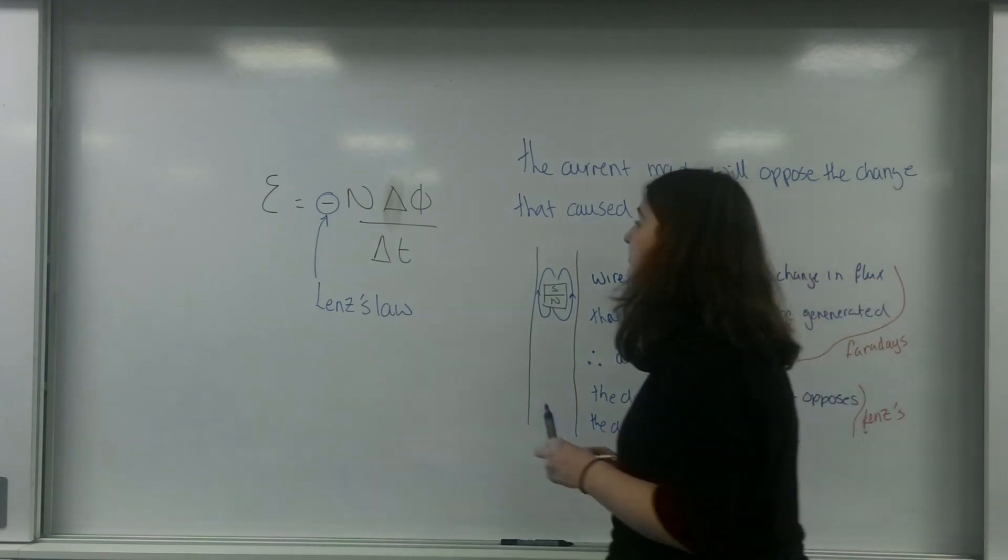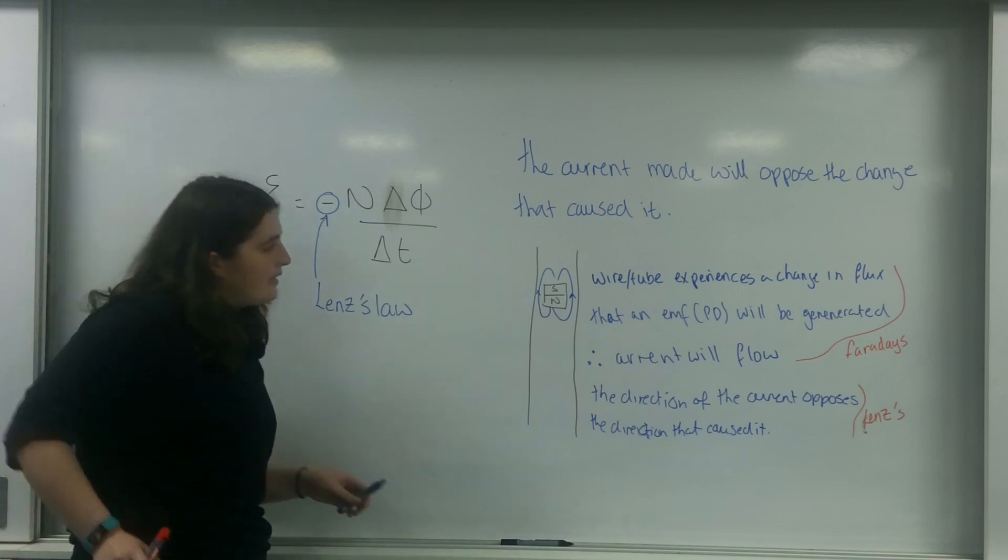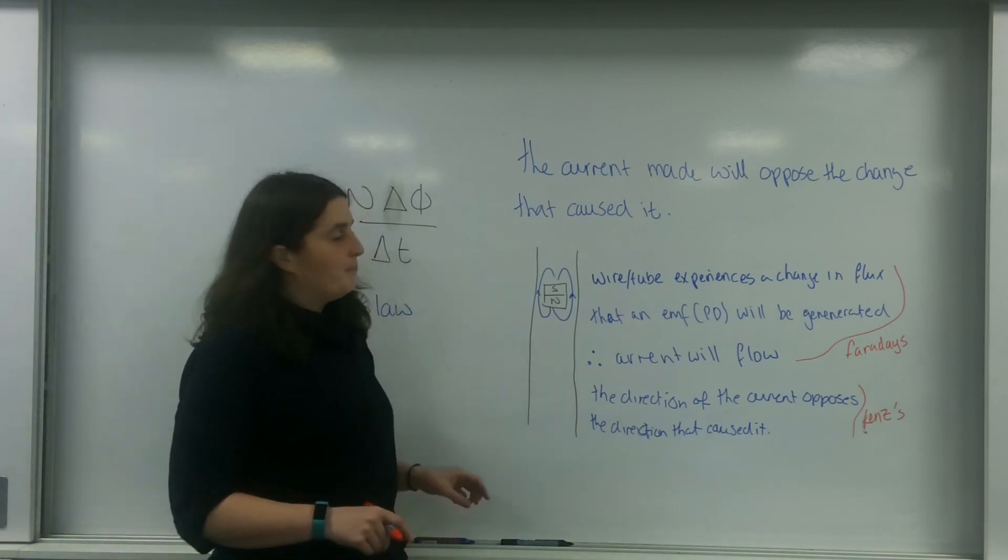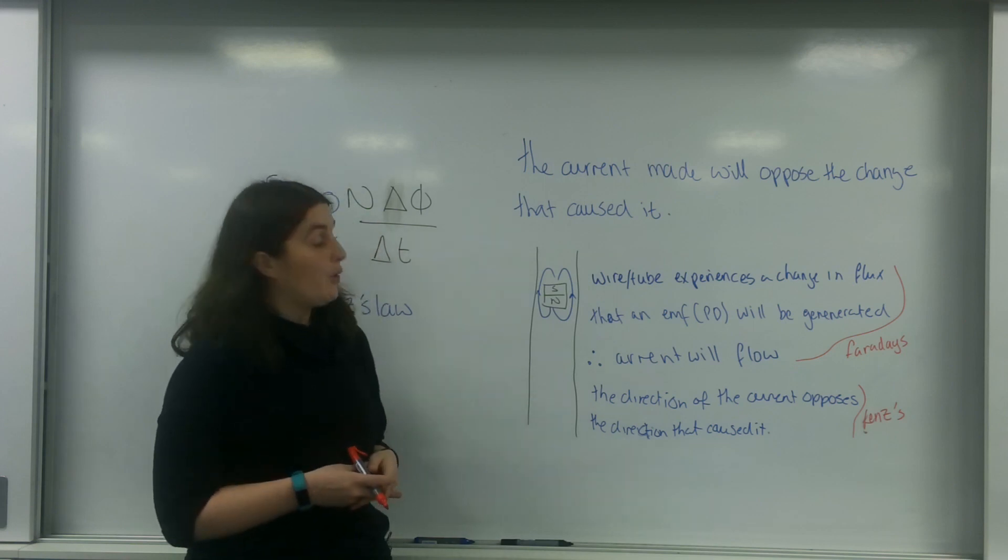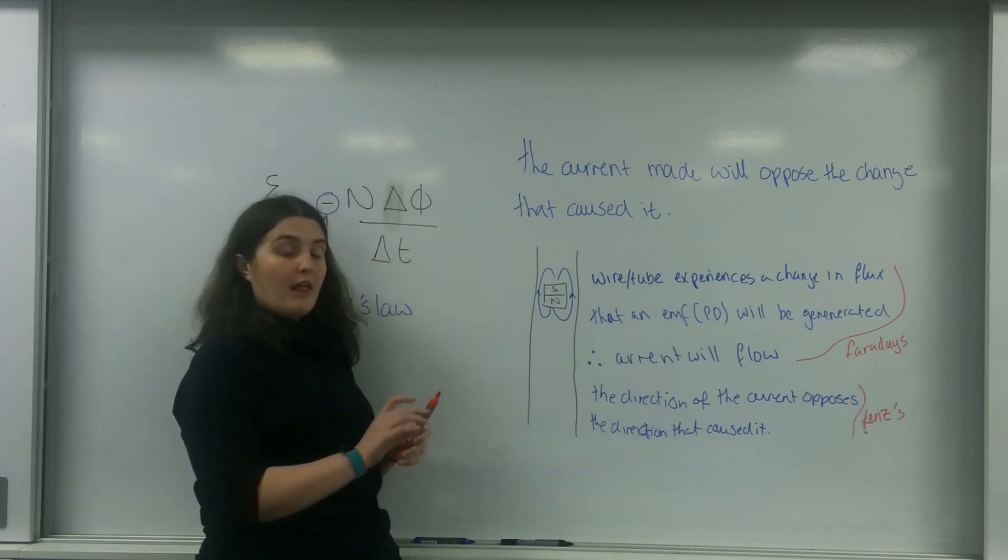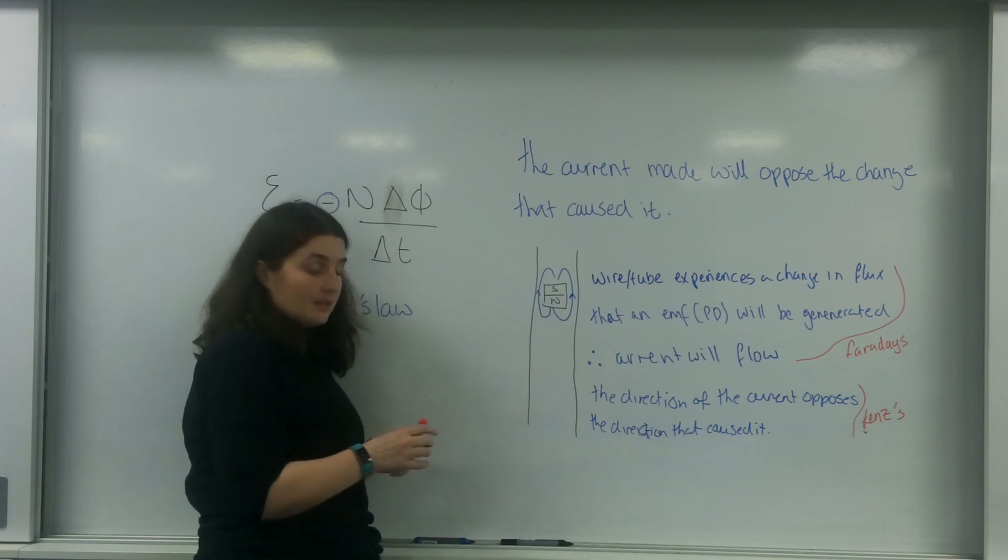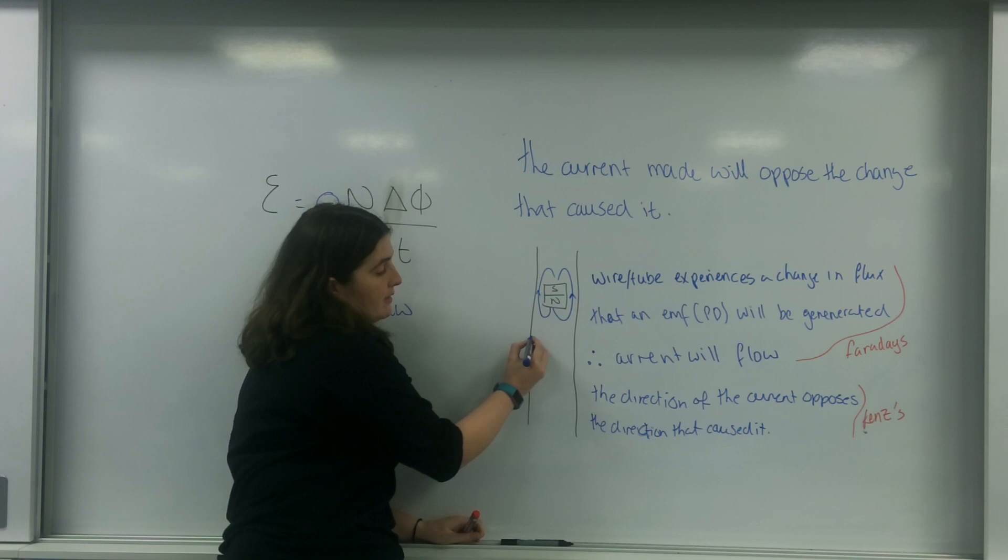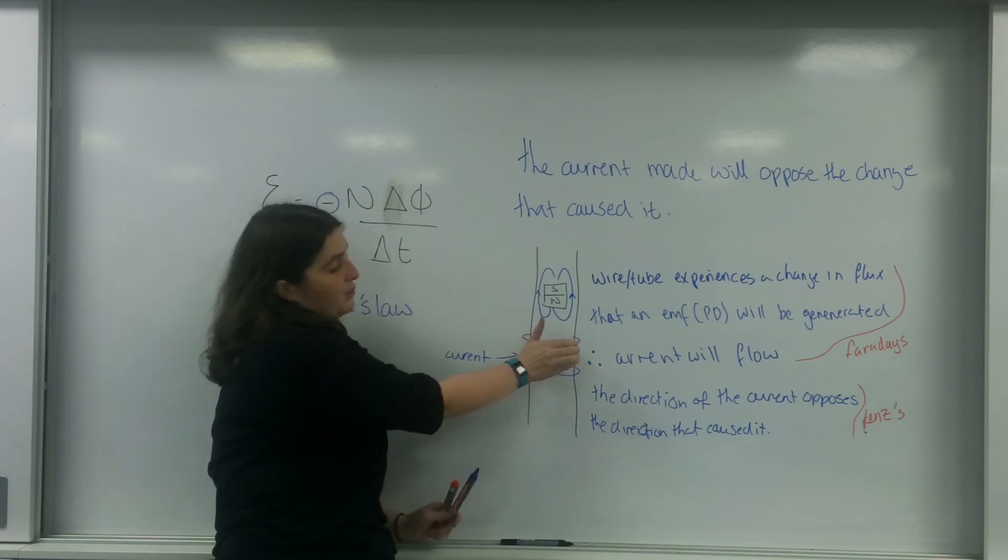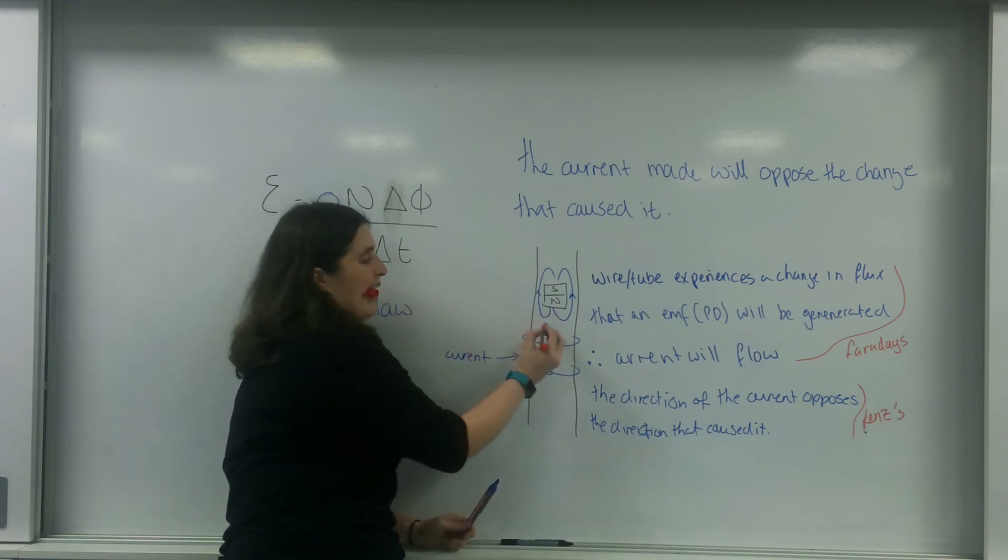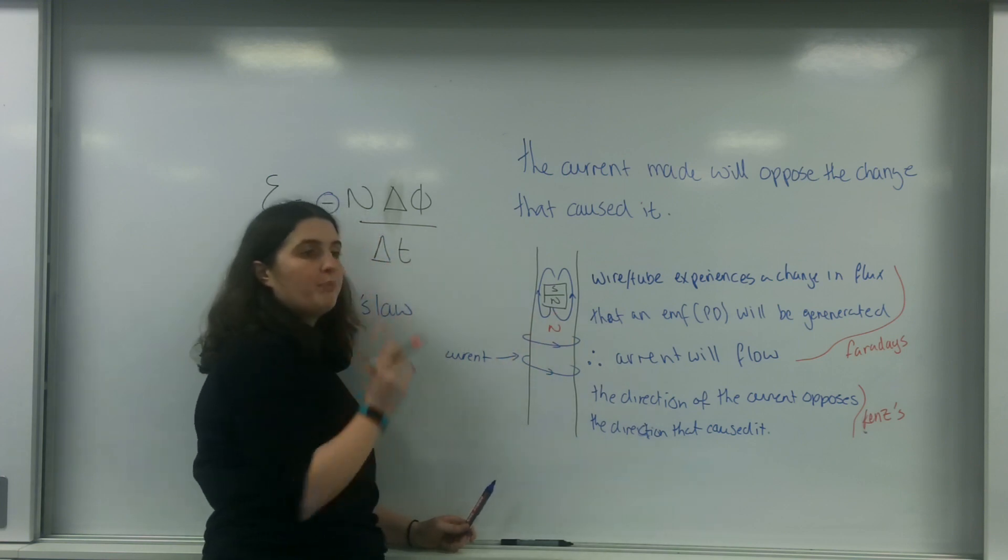And what I mean by this is exactly what was happening there. That's a very visual way of seeing what was going on. The current that will flow will make sure that it opposes the object. So what will happen is the current will flow this way. This is the current. Because if I use the right-hand screw rule, that will be the north pole.